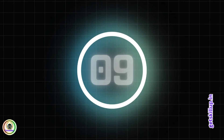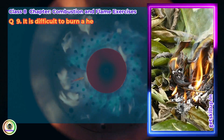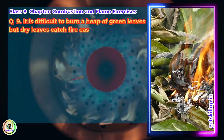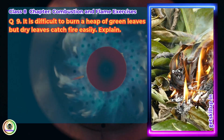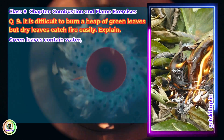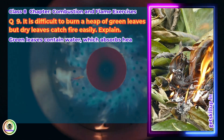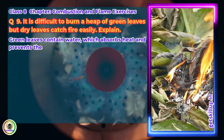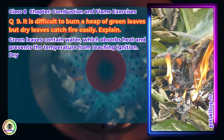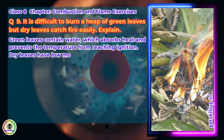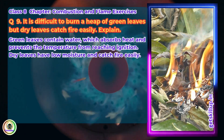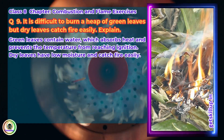Question 9: It is difficult to burn a heap of green leaves, but dry leaves catch fire easily. Explain. Answer: Green leaves contain water, which absorbs heat and prevents the temperature from reaching ignition. Dry leaves have low moisture and catch fire easily.